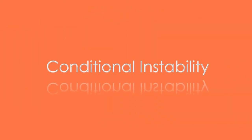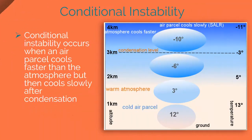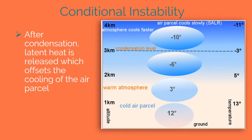Conditional instability occurs when an air parcel cools faster than the atmosphere but then cools more slowly after condensation. After condensation, latent heat is released, which offsets the cooling of the air parcel.